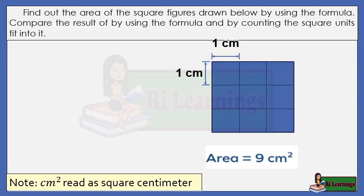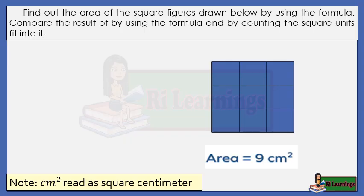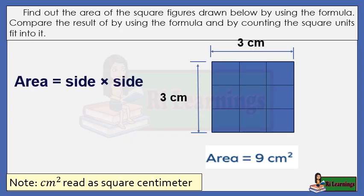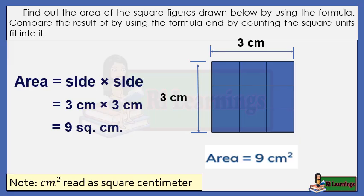Find out the area of the square figures drawn below by using the formula, and compare the result with counting the square units. Since the side of the square has 3 units of 1 centimeter squares, the length of the side of the square will be equal to 3 centimeters. Using the formula: area equals side times side — 3 centimeters times 3 centimeters equals 9 square centimeters.